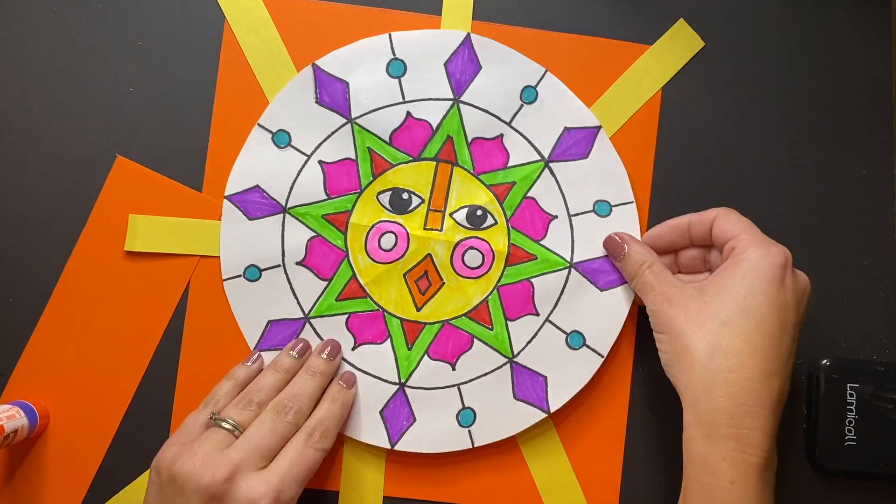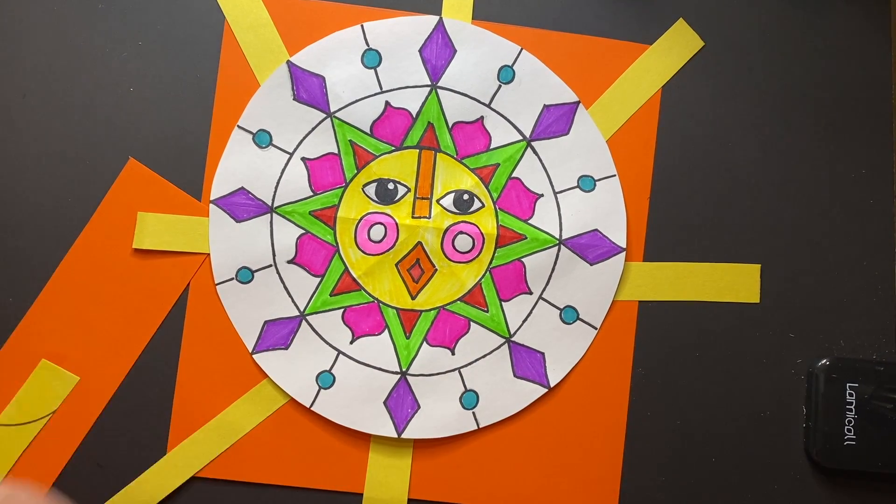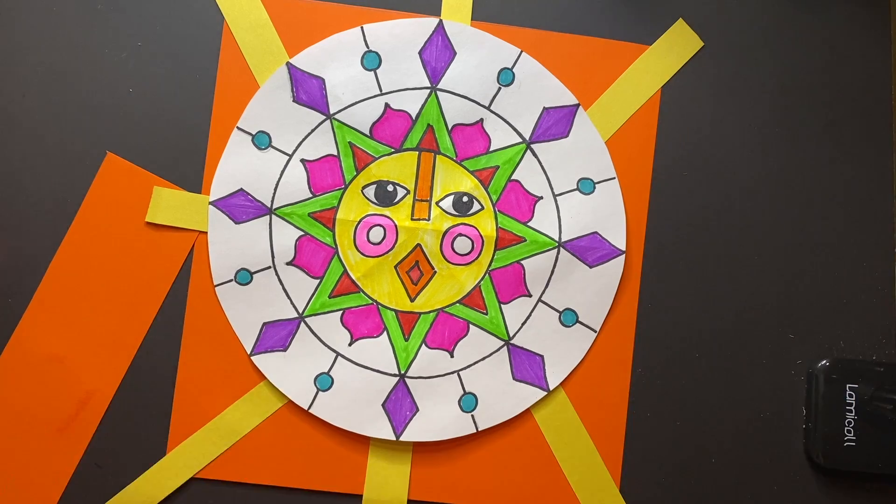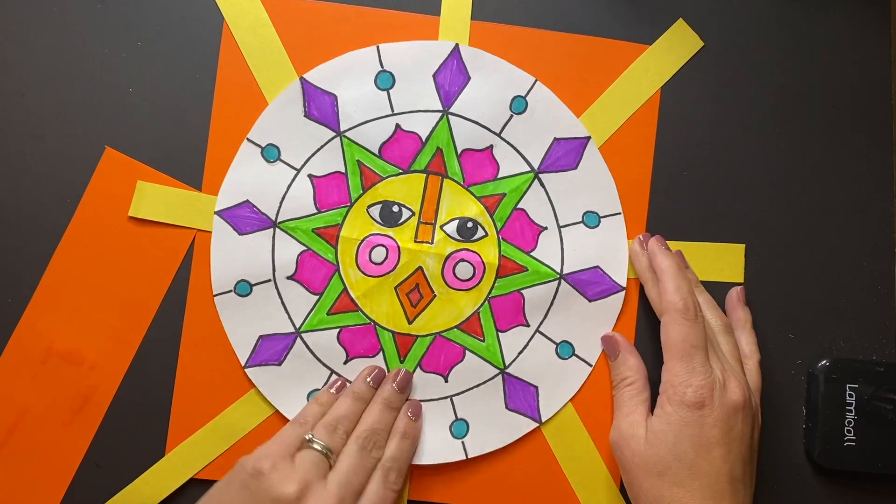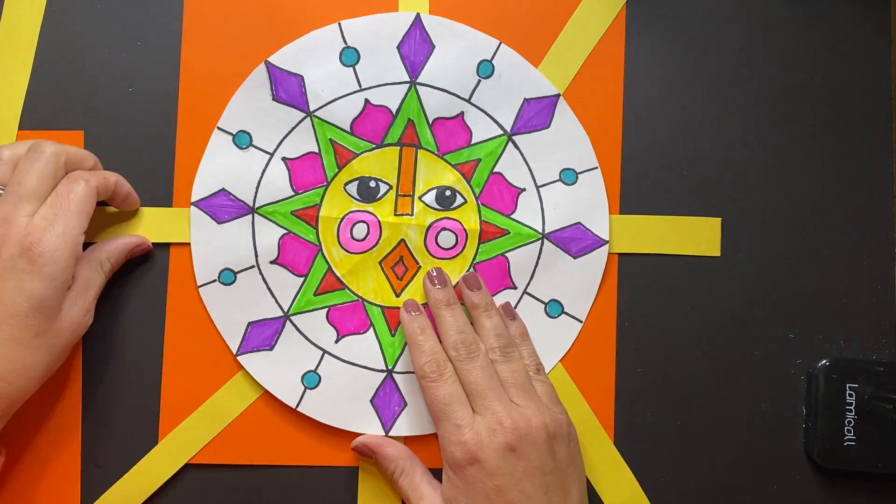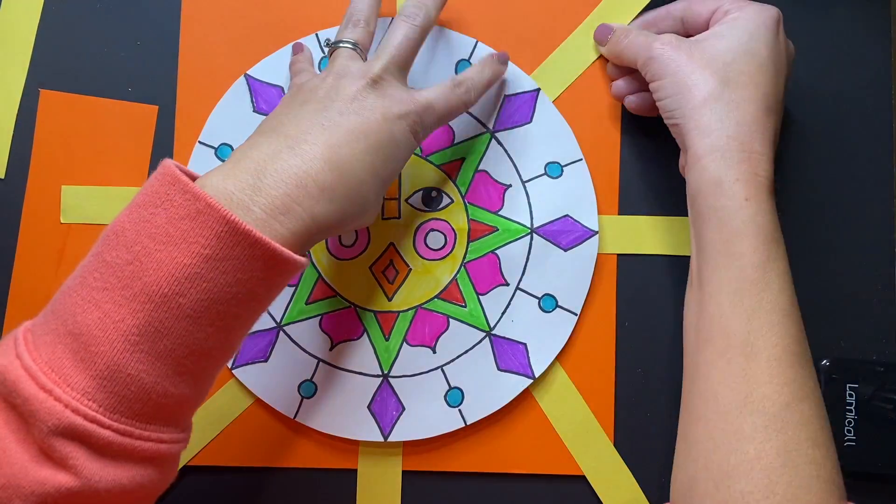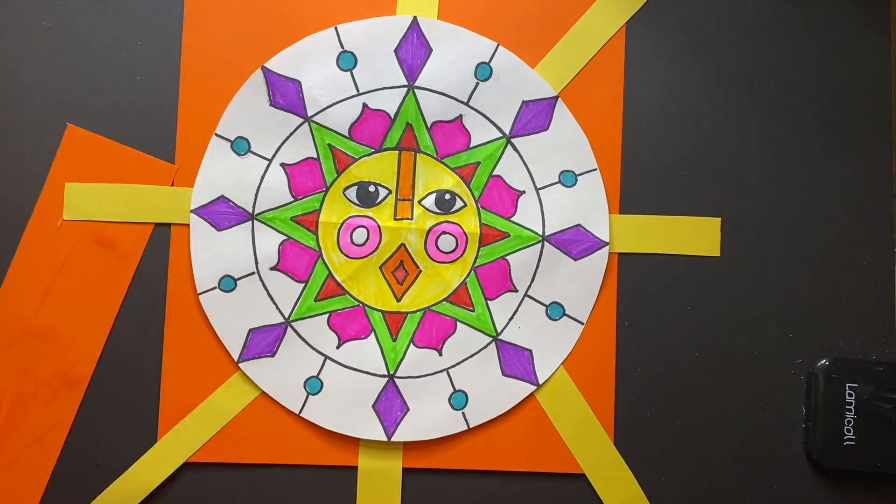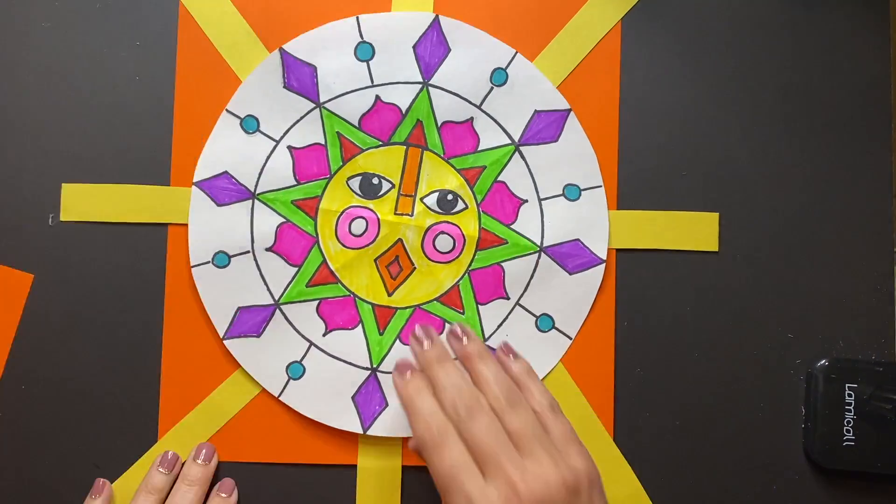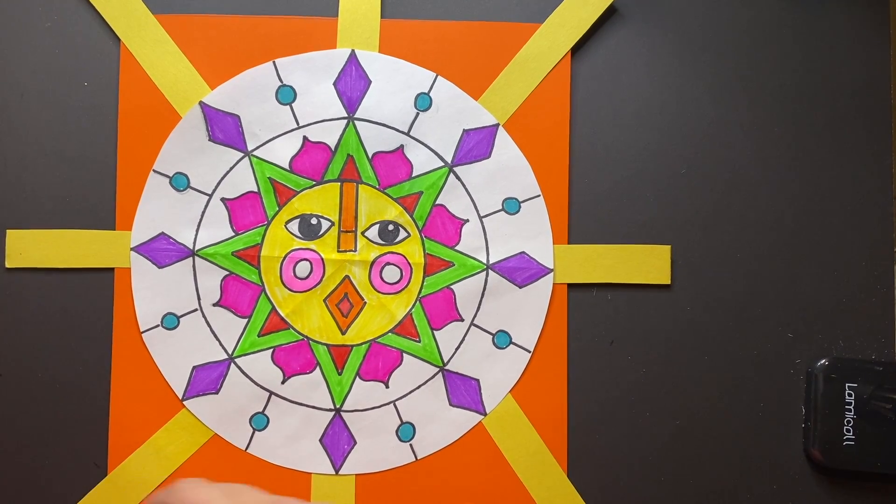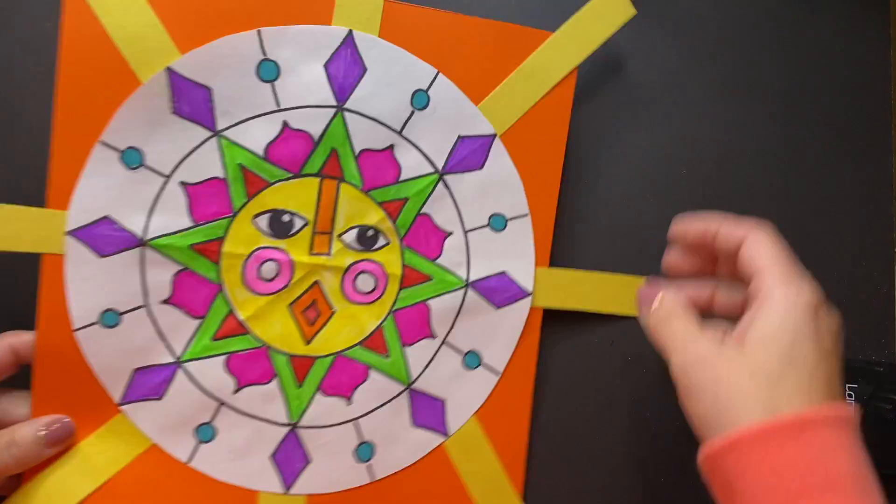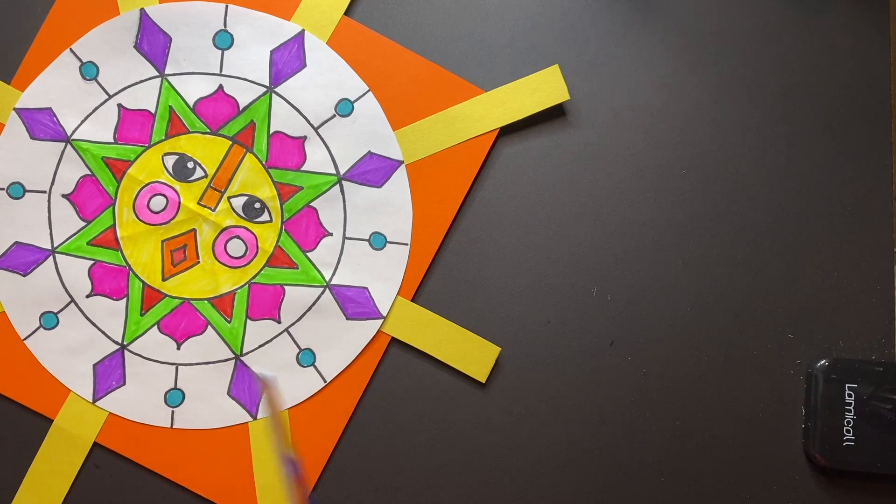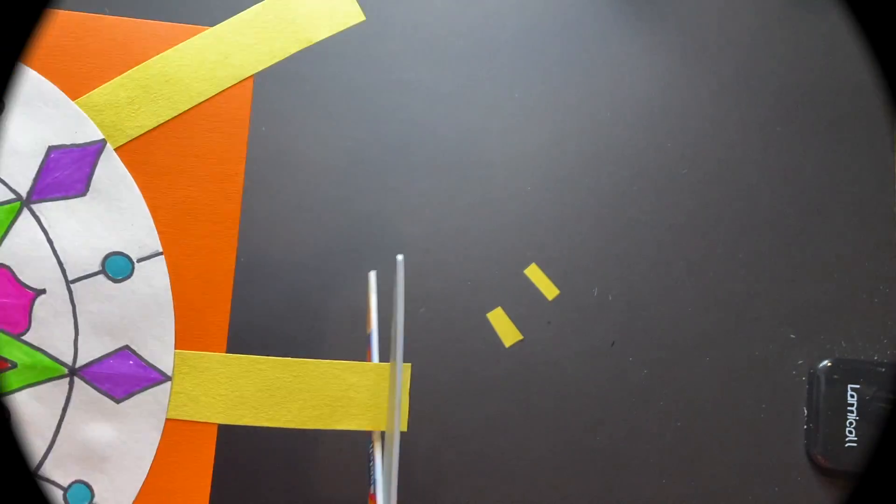Take your time and glue each sun's rays onto the orange paper, taking into consideration the placement. Then once you're finished gluing all of those, go ahead and flip over your piece of paper and glue your sun on top of all of those. And lastly, I like to grab my scissors and maybe just trim up some of the rays coming out that way they're a little bit more equal. But if you like some of them a little bit longer than others, then again that is up to you.